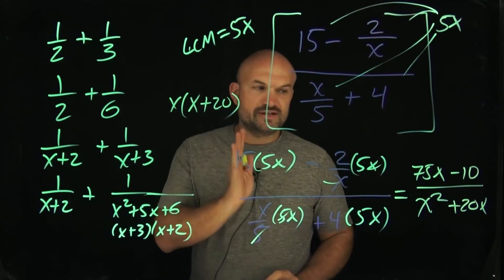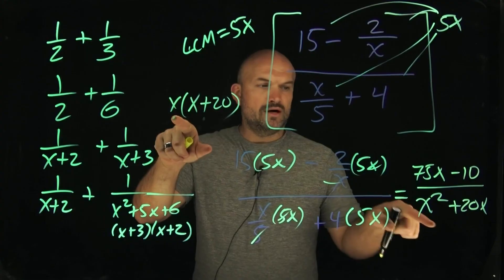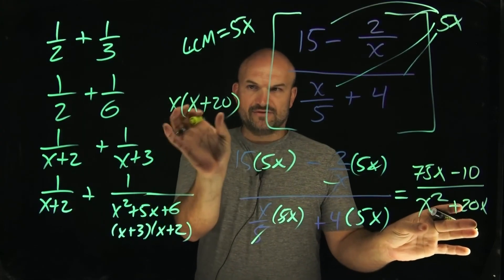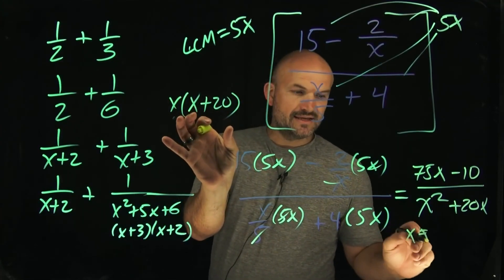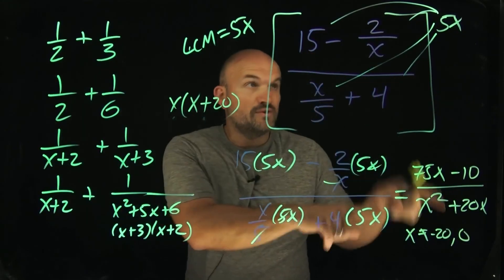But we do need to understand our restricted values. What we want to do is say, what values are going to make my denominator equal to 0? Here, you basically set your denominator in factor form equal to 0, and you'd say x cannot equal a negative 20 as well as a 0, which is also reflected up there.